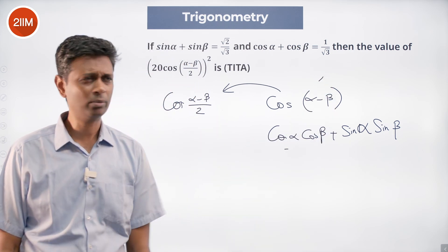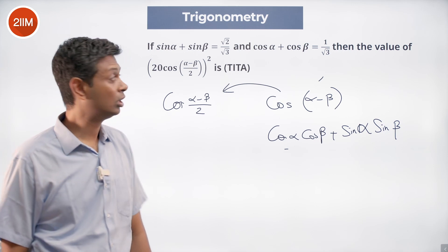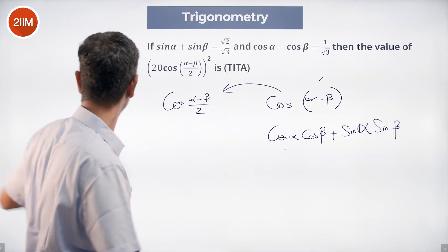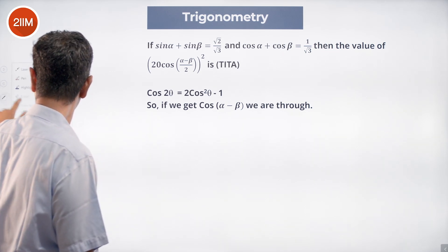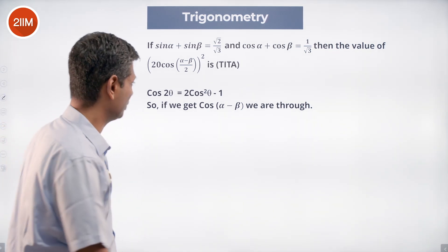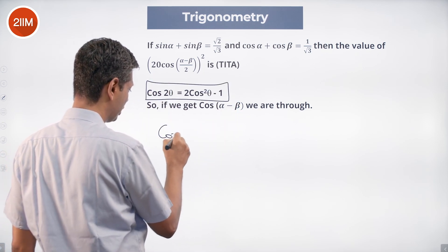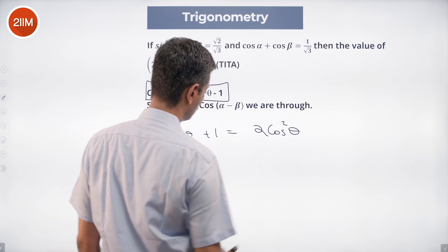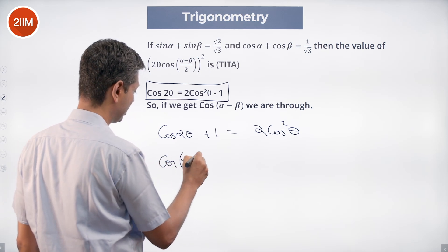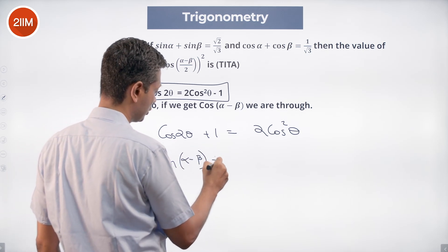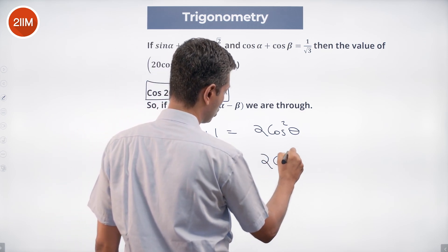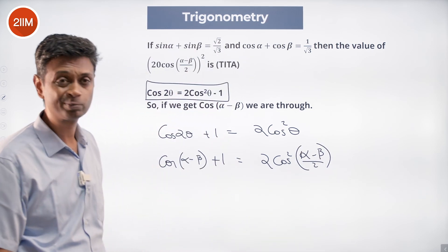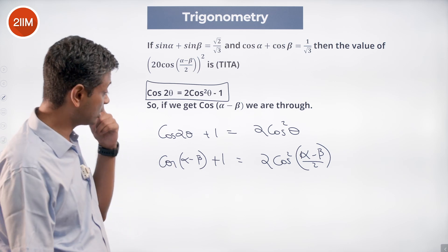Now I'm going to look at sinα + sinβ and cosα + cosβ — is there a way to carve cos(α-β) out of those? First, we know that cos(2θ) = 2cos²θ - 1, so cos(2θ) + 1 = 2cos²θ. So if we can somehow find cos(α-β) + 1, we have 2cos²((α-β)/2). The whole idea is to find cos(α-β); once we find that, we are through.